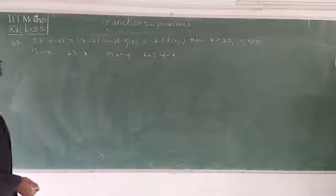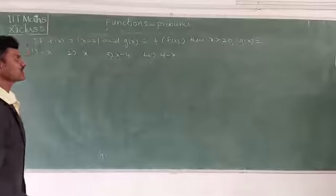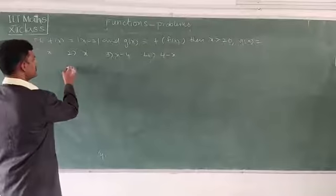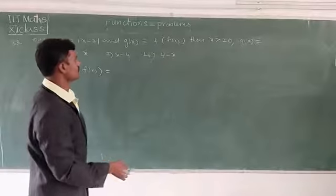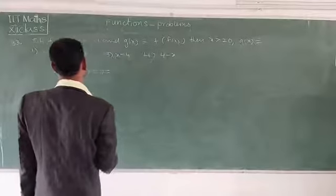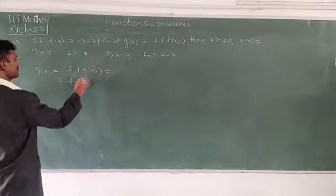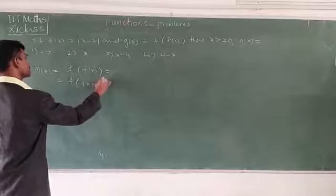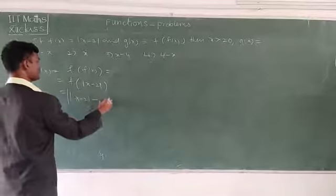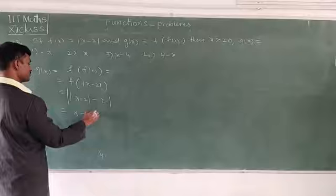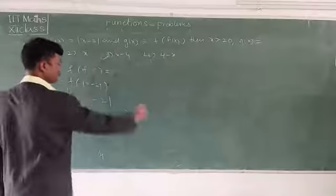Problem 33: If f(x) = |x - 2| and g(x) = f(f(x)), find g(x) for x > 20. First, f(x) = |x - 2| = x - 2 for x > 20 (since x > 2). Then g(x) = f(f(x)) = f(x - 2) = |(x - 2) - 2| = |x - 4| = x - 4, since x > 20 implies x - 4 > 0. So g(x) = x - 4.